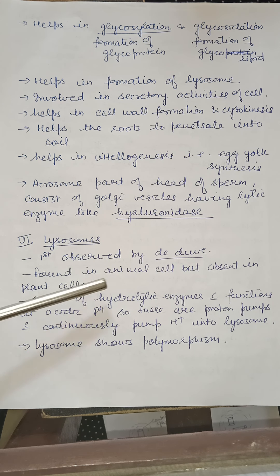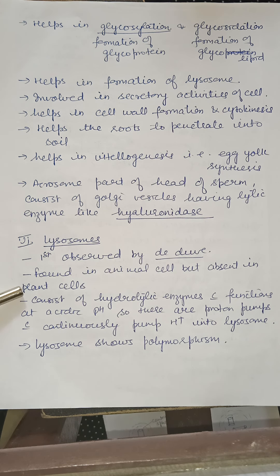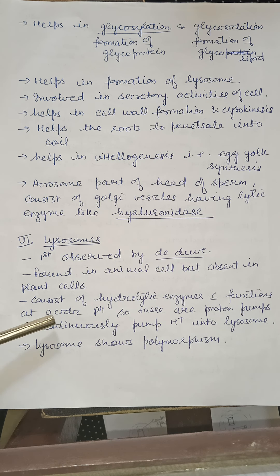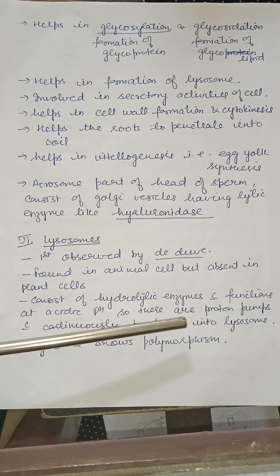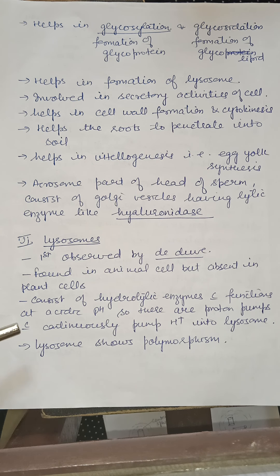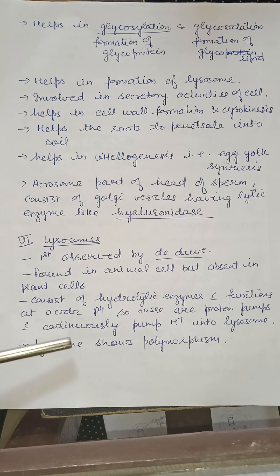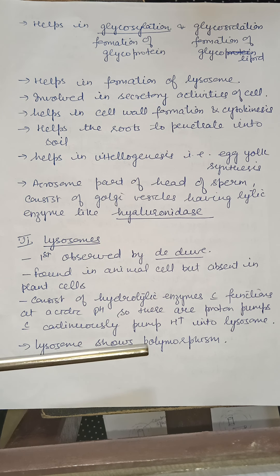To summarize: lysosomes are found in animal cells but absent in plant cells. They consist of hydrolytic enzymes which function at acidic pH, maintained by proton pumps that continuously pump hydrogen ions into the lysosomes. Lysosomes show polymorphism.